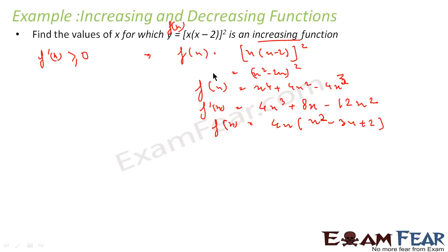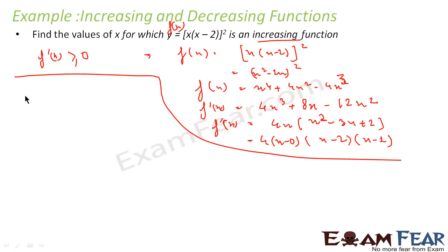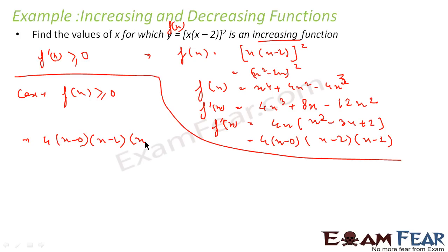Now let's solve this. f'(x) = 4(x-0)(x-2)(x-1), and this has to be greater than or equal to 0. There is only one case here: my f'(x) has to be greater than or equal to 0, so 4(x-0)(x-2)(x-1) ≥ 0.